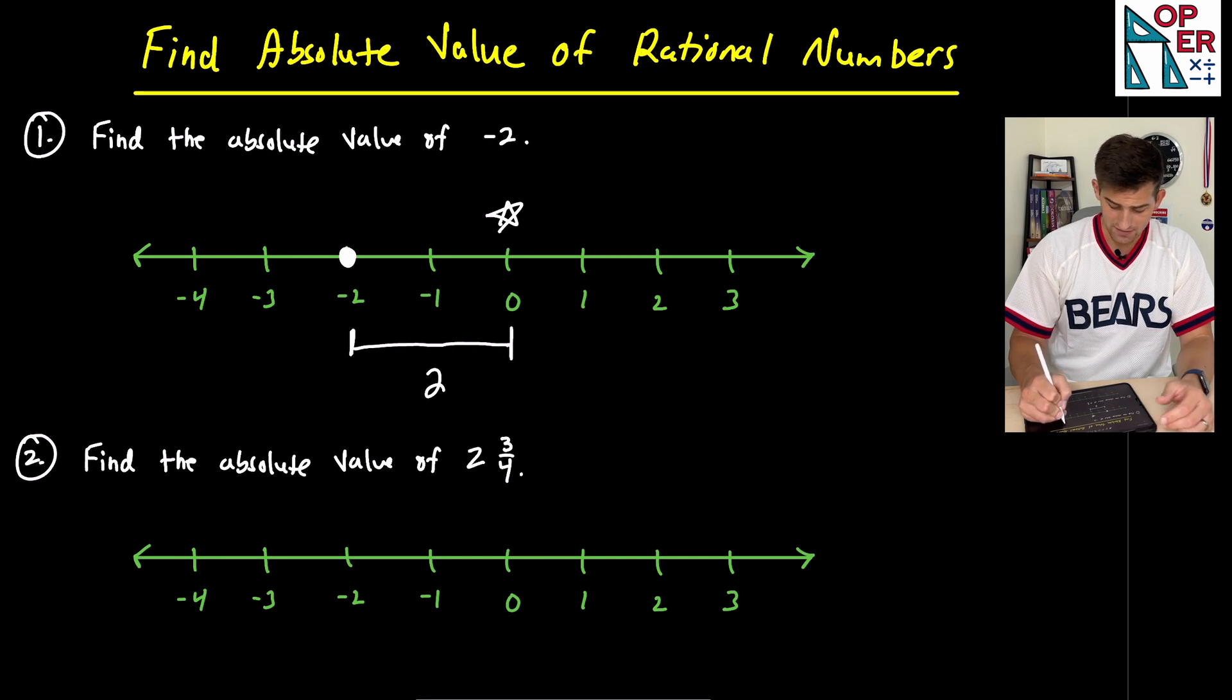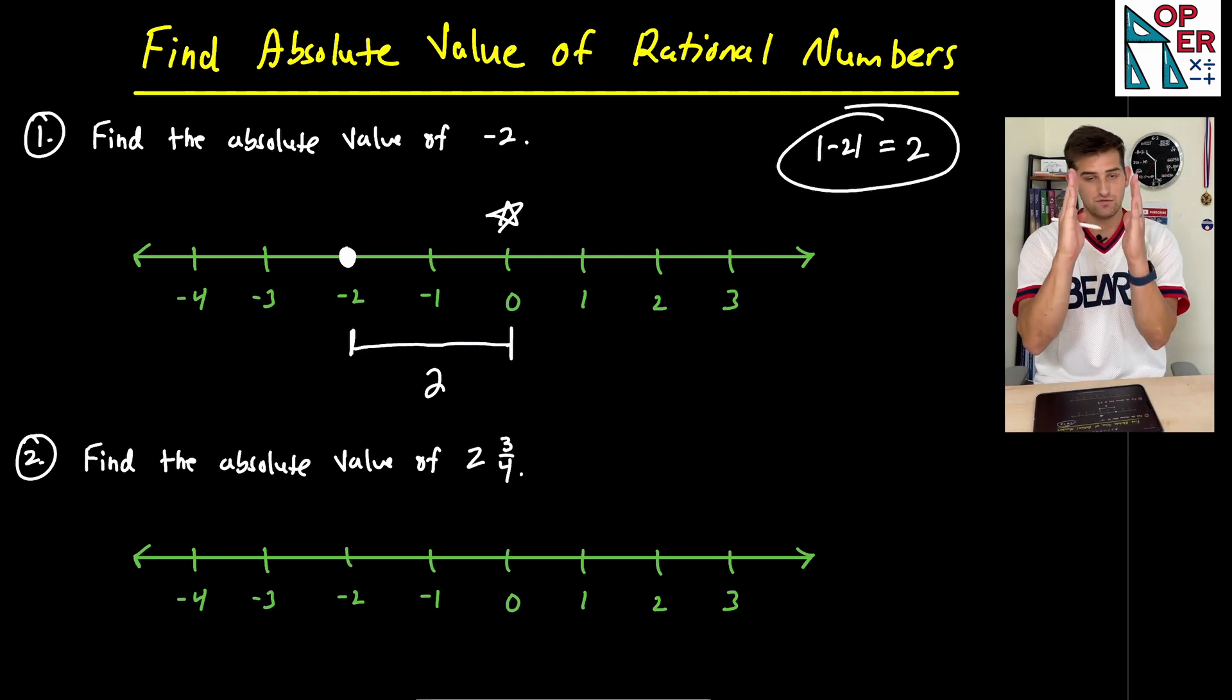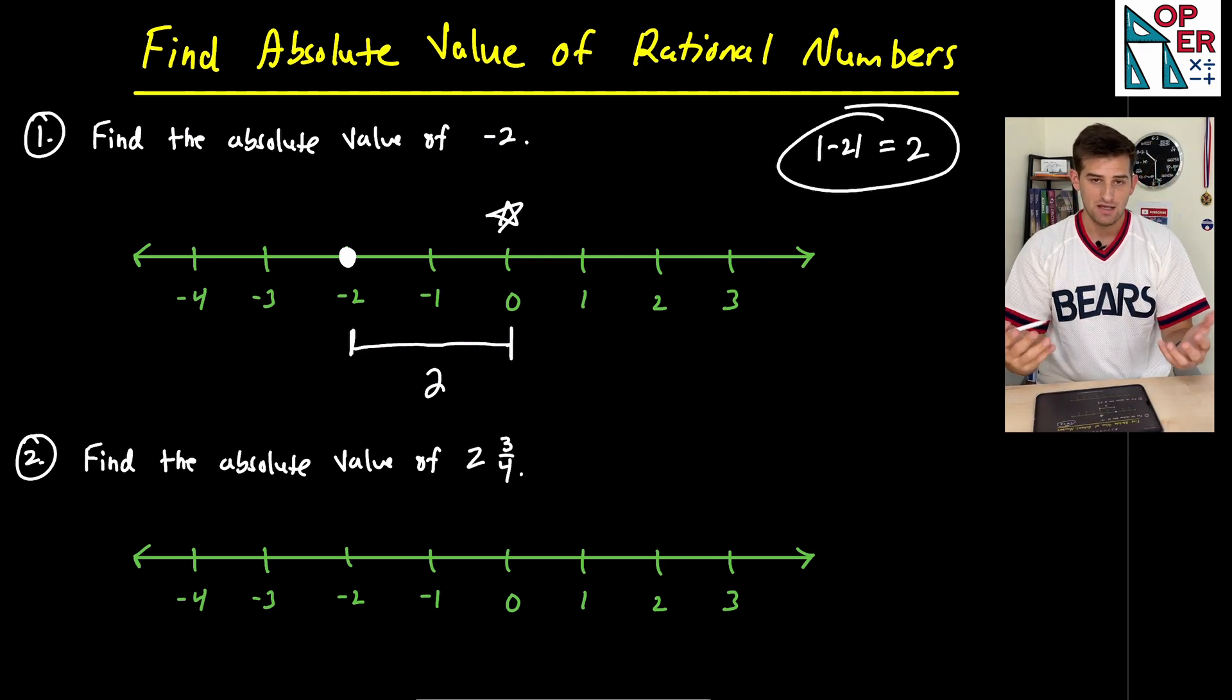So our absolute value here would be two. So we could write this as the absolute value of negative two is equal to two. So those two vertical bars there, that represents absolute value.